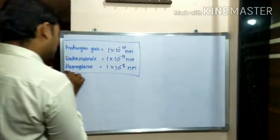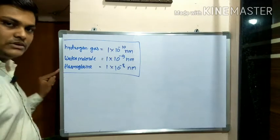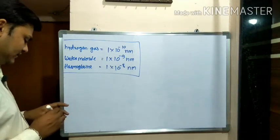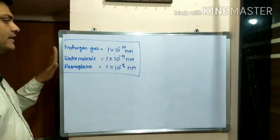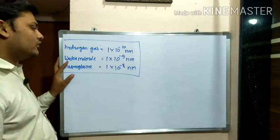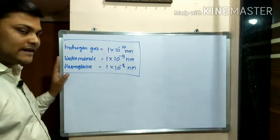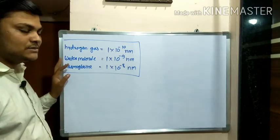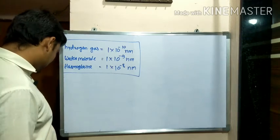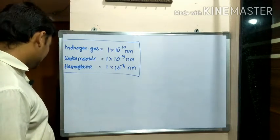You must note down these three important factors: the atomic radius of hydrogen gas is 1 into 10 to the power minus 10, water molecule is 1 into 10 to the power minus 9, and hemoglobin is 1 into 10 to the power minus 8 Nm. These are the atomic radius of some elements.